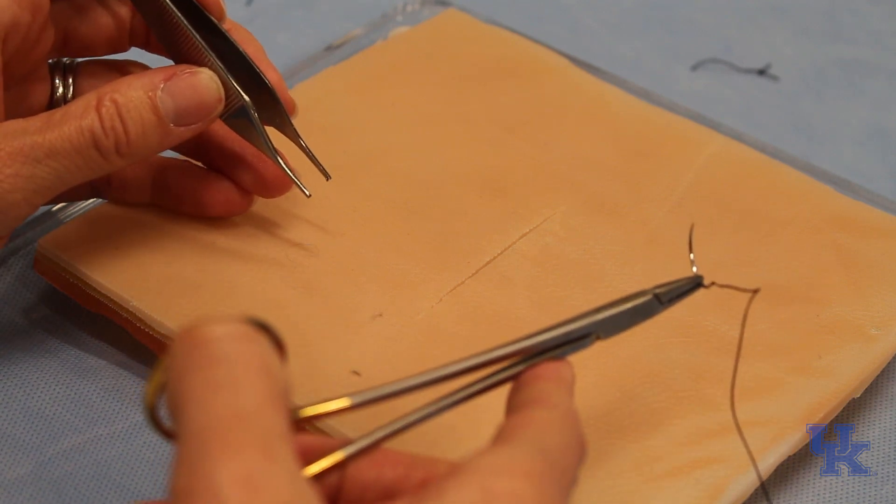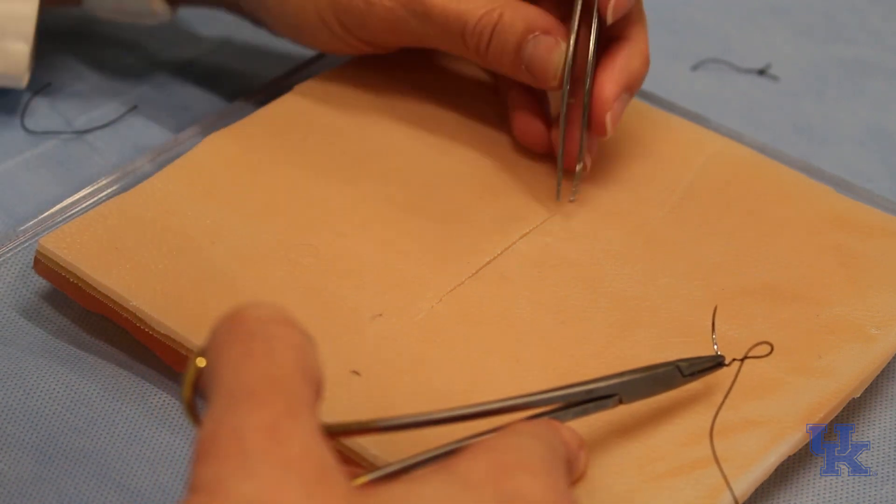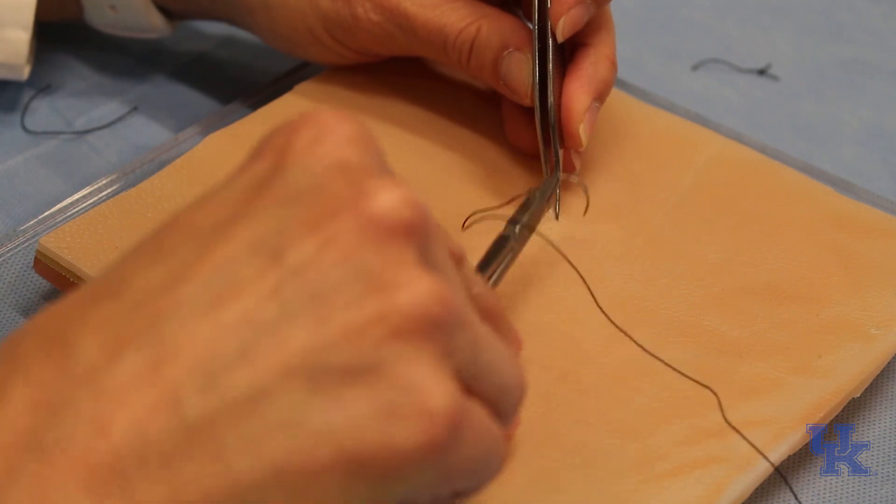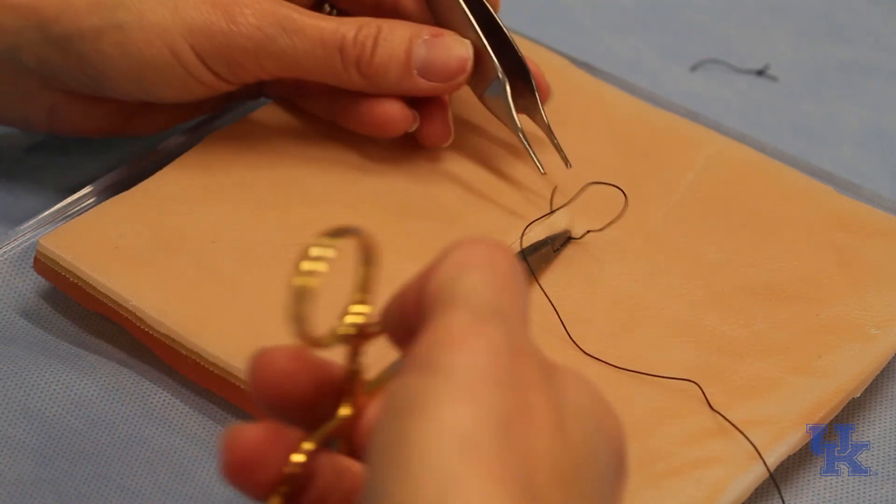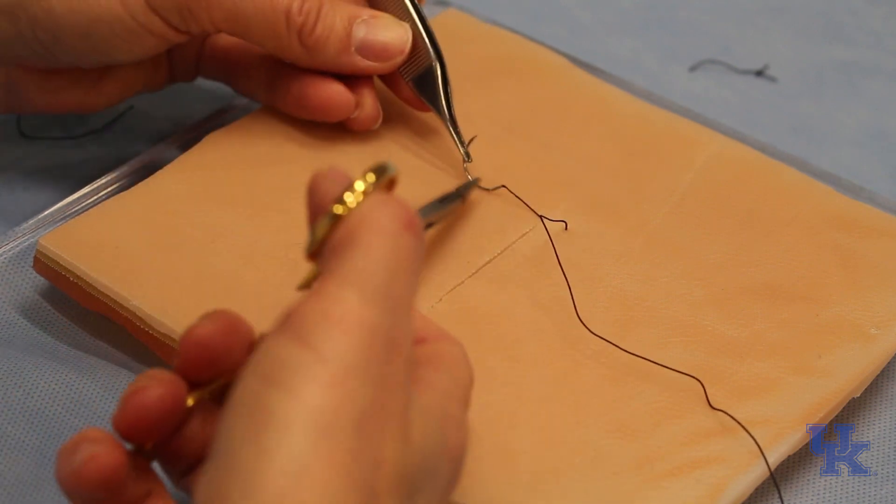Now I'm going to demonstrate variations of simple interrupted sutures. We'll start with a horizontal mattress and basically the very first two throws are going to be the two that you do for a simple interrupted stitch.